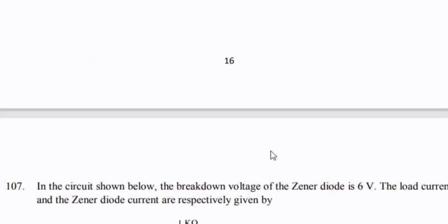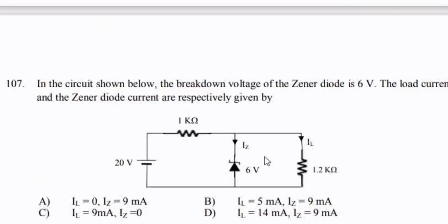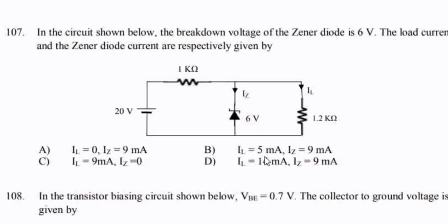I₀ increases with temperature for both silicon and germanium diodes.